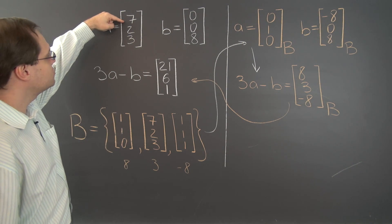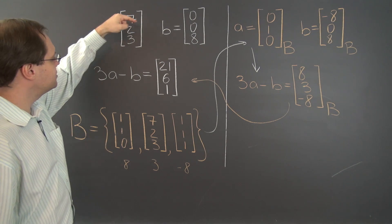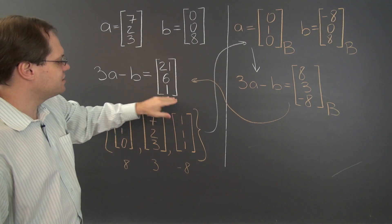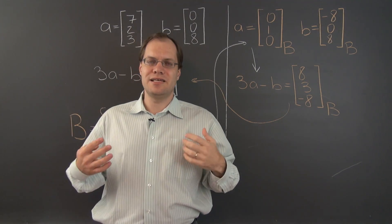Just making sure, 21 minus 0, 6 minus 0 is 6, and 9 minus 8 is 1. So indeed, this scheme works.